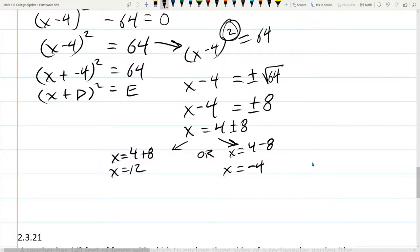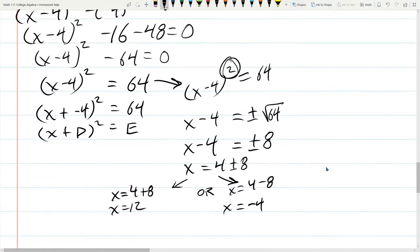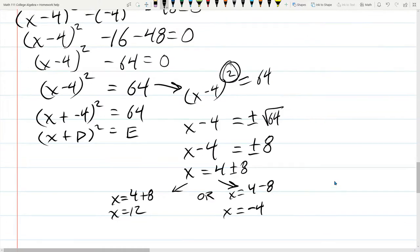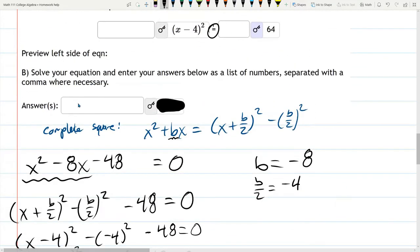So, this question asked, enter them separated by a comma. Just the x value separated by a comma. I like to put the small x value first for lots of reasons. Besides from just wanting to be organized, some questions tell you enter the smallest values before the larger ones. So, I'm going to put the negative 4 before the 12.